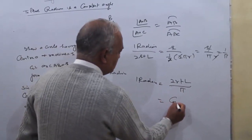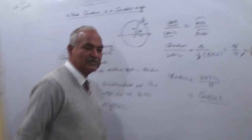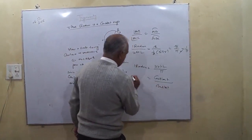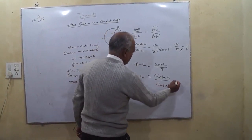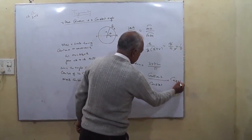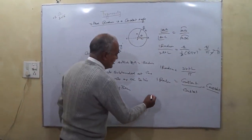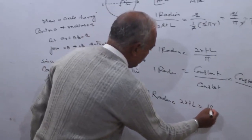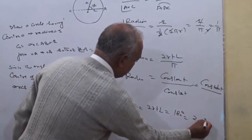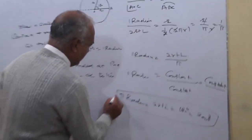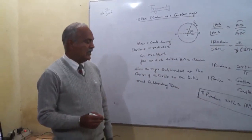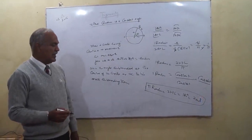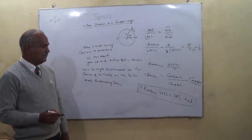Two right angles is constant and pi is also constant. Constant upon constant is constant. We get the relation: pi radian is equal to two right angles, which equals 180 degrees, which equals 200 grade.